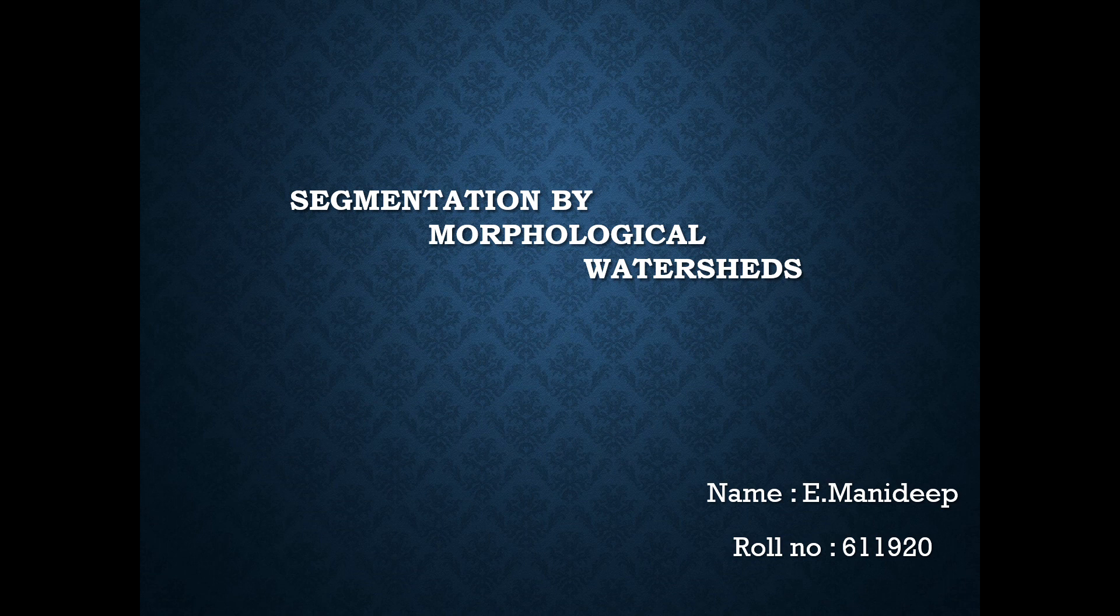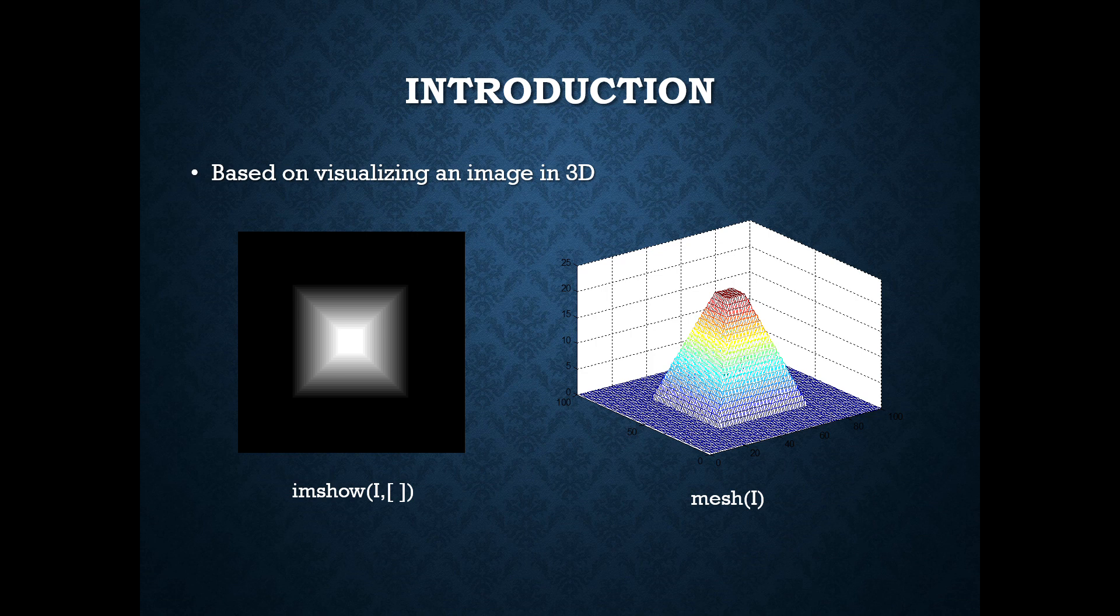Morphological watersheds is a concept based on visualizing an image in three dimensions. That is, visualizing the two spatial coordinates versus intensity in such a topographic interpretation of an image. We consider three types of points.